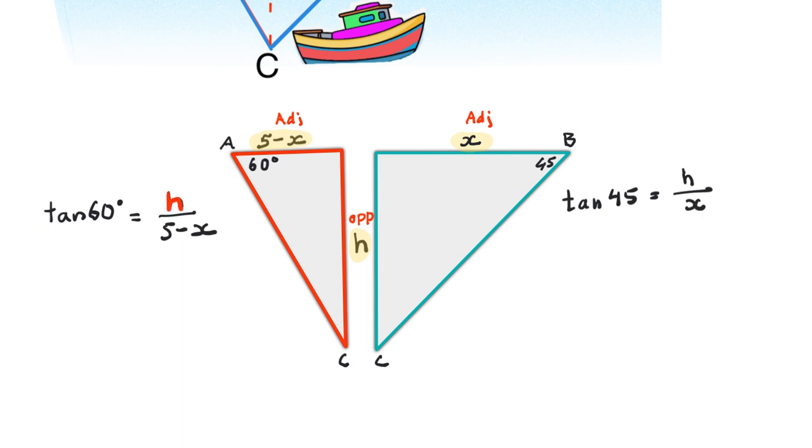And it is H that we're interested in and H is on both sides. So we have two equations with H in it. This calls for simultaneous equation workout. By rearranging both equations just for H, H here will be equal to 5 minus X in brackets multiplied by tan 60, and H on the other side can be rearranged also to be X times tan 45.